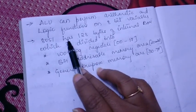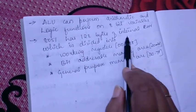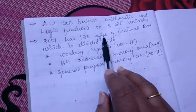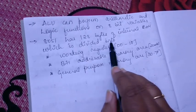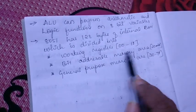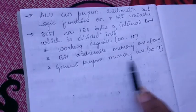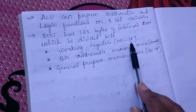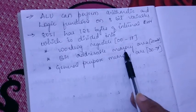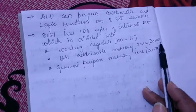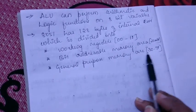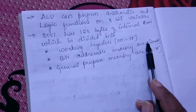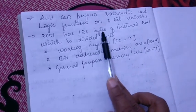Next, 8051 has 128 bytes of internal RAM which we have already seen. This 128 bytes of internal RAM is divided into working registers, bit addressable memory area, and general purpose memory area. Working register starts from 00 to 1F, bit addressable memory area starts from 20 to 2F, and general purpose memory area is from 30 to 7F. This complete space is collectively 128 bytes of internal RAM.